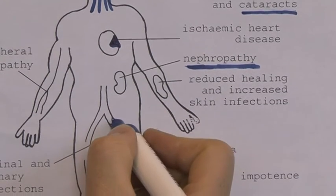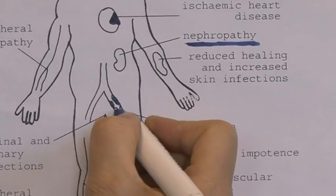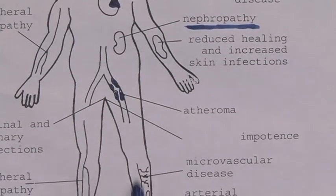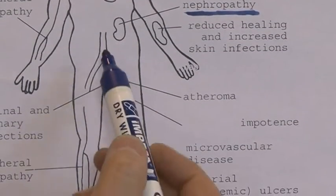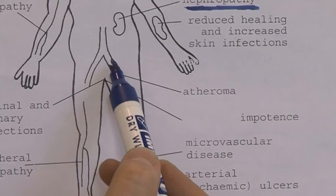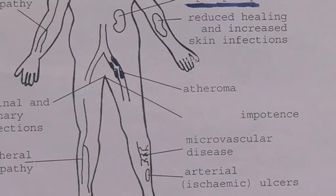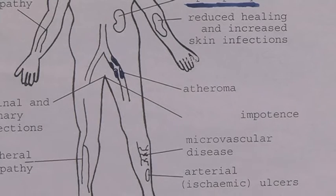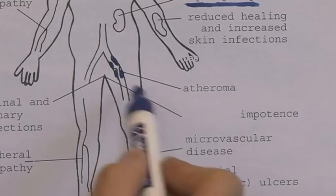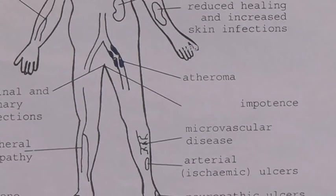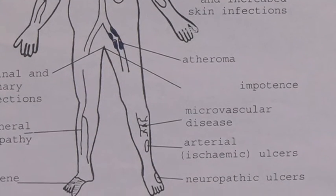Atheroma in the large arteries can lead to peripheral vascular disease. If these vessels are partly blocked off, there's going to be less blood going to all of the leg. Impotence is a complication of the autonomic neuropathy.